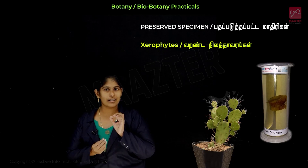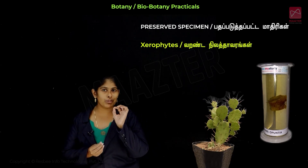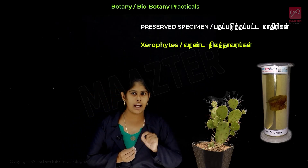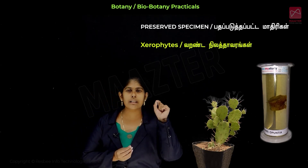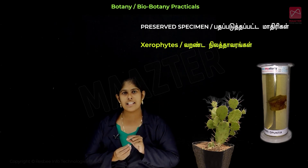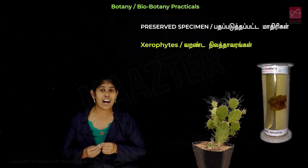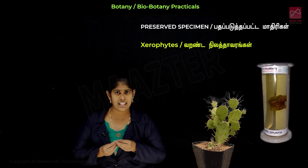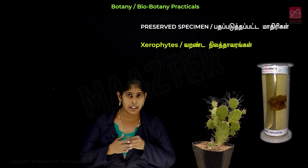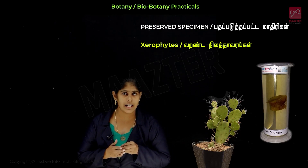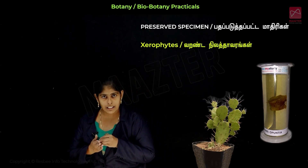For Botany (12th standard): slides 3 marks, preserved specimen 2 marks, models or photographs or charts 2 marks, problem solving 3 marks, experiment 3 marks, and economic importance of plants 2 marks. Total: 15 marks.